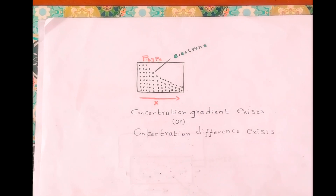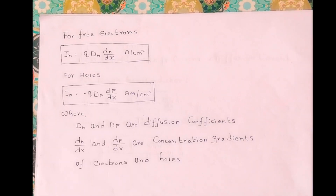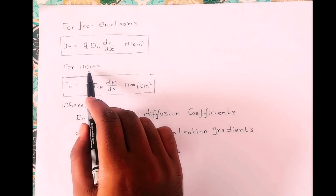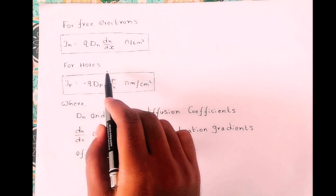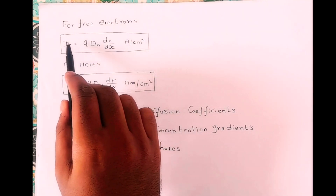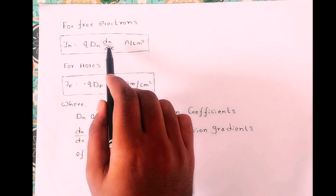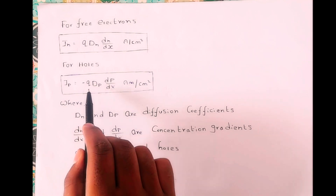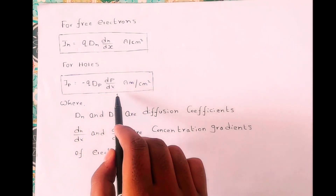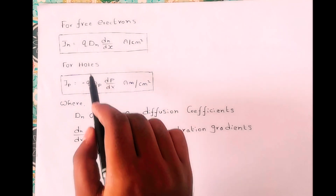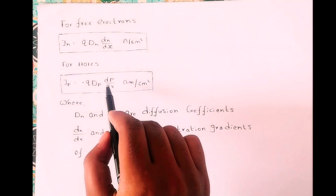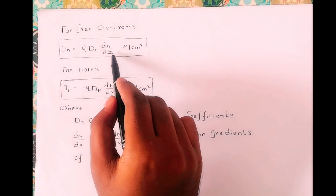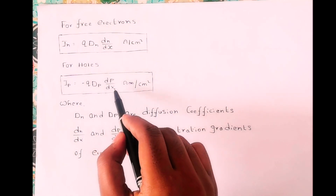Now let's see the expressions for diffusion current densities. The diffusion current density due to electrons is denoted by Jn and given as Jn = qDn(dn/dx). For holes, it is denoted by Jp and given as Jp = −qDp(dp/dx), where Dp and Dn are diffusion coefficients, and dn/dx and dp/dx are the concentration gradients of electrons and holes respectively.